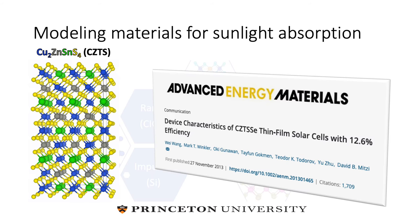For these reasons, kesterite solar cells based on dicopper zinc tin tetrasulfide, or CZTS, are promising because they're cheap to make, made from abundant and non-toxic elements, and stable. Unfortunately, though, their efficiencies are rather low and haven't changed since 2013, and this is largely believed to be due to the formation of defects — for example, the copper-on-zinc, zinc-on-copper antisite cluster, which has been shown to induce bandgap fluctuations that reduce the open circuit voltage.